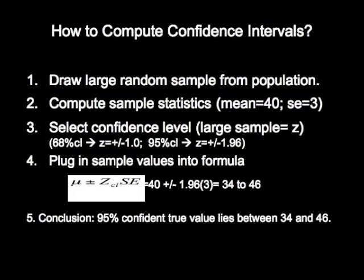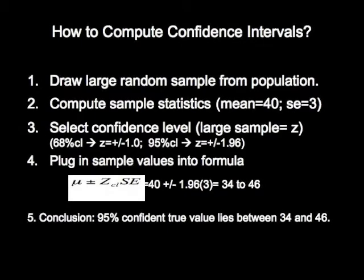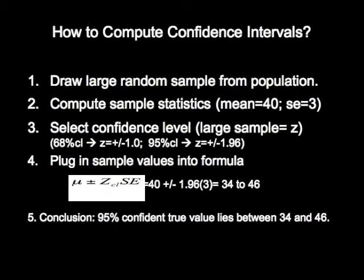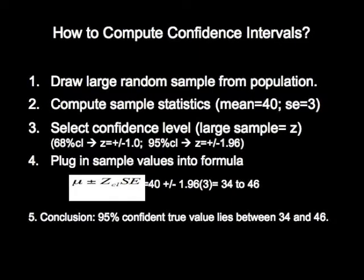You select a confidence level. So if you pick a 68% confidence level for a large sample, that corresponds to a z of plus or minus 1.0. Or if you pick a 95% confidence level, it corresponds to a z of 1.96.